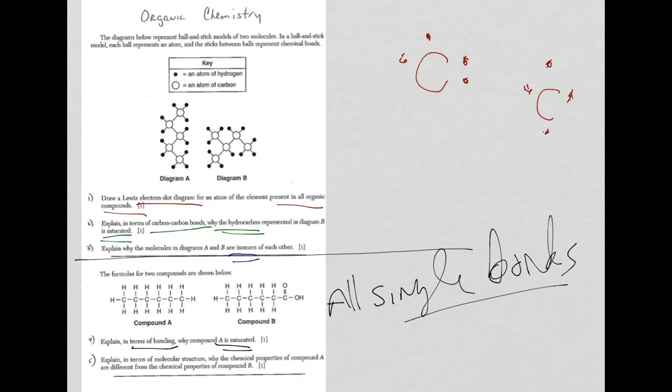Alright, in question five, it says, explain in terms of molecular structure why the chemical properties of compound A are different from compound B. Well, I think it's pretty obvious. Compound A, you only have carbons and hydrogens. And in compound B, look, you've got two oxygens also. You have what's known as a functional group.